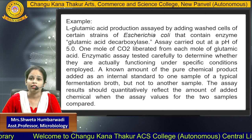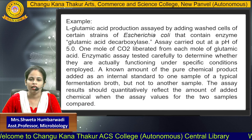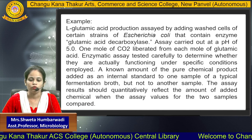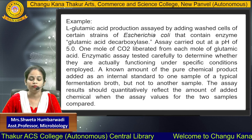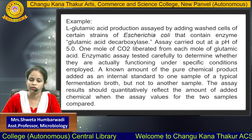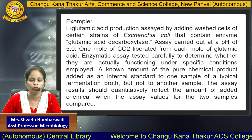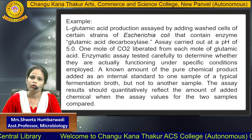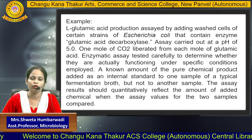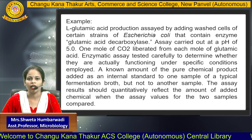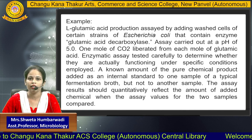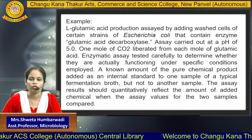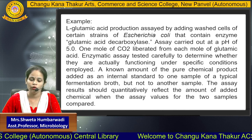The enzymatic assay is tested carefully to determine whether it is actually functioning under the specific conditions employed. In the glutamic acid assay, the enzyme glutamic acid decarboxylase functions at pH 5.0, so we apply pH 5.0. Under this condition, the enzyme converts glutamic acid into a product, and along with this, CO2 is liberated. That CO2 level can be checked to detect the unknown concentration of glutamic acid.